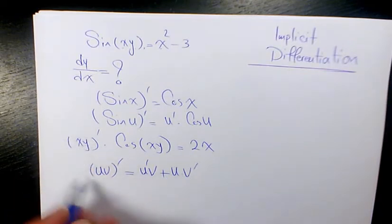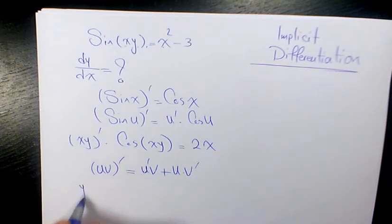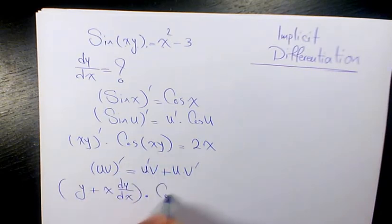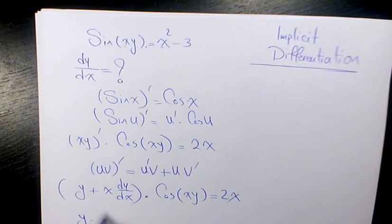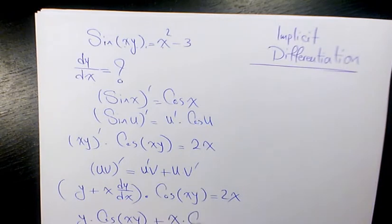So that's going to be y plus x dy over dx times cosine xy equals 2x. Now you expand it, it's going to be y times cosine xy plus x times cosine xy dy over dx equals 2x.